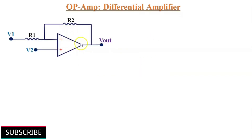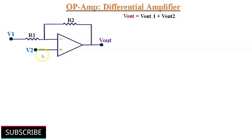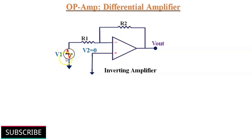To find out the output voltage, we use the superposition theorem — we consider one input voltage at a time, and later add individual responses to get the final output: Vout = Vout1 + Vout2. First, consider V1 is acting alone and V2 is at ground potential. Because of the inverting configuration, Vout1 = −(R2/R1) × V1.